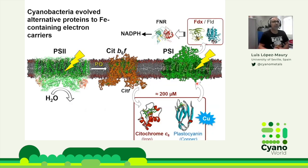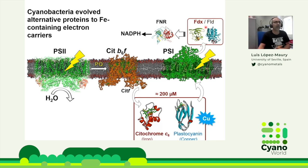In response to reduced iron availability after the appearance of oxygen, cyanobacteria evolved alternative electron transporters in the photosynthetic machinery. These are the ferredoxin-flavodoxin pair, the final acceptors of PS1. Ferredoxin is an iron-sulfur protein, while flavodoxin has an FMN cofactor as a redox-active cofactor. The other pair was plastocyanin, an alternative to cytochrome C6 as electron transporter between cytochrome B6F and PS1.